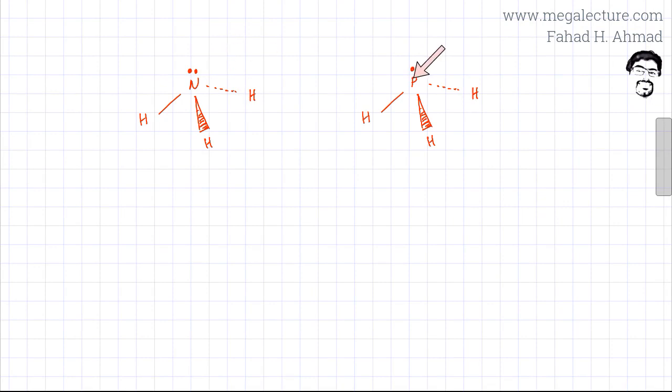In NH3, nitrogen and phosphorus are in the same group, so they have the same number of outer-shell electrons. NH3 forms three bonds with hydrogens and has a lone pair on top, making it a trigonal pyramidal molecule. The same is true for PH3 as well.